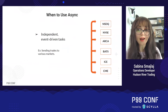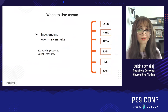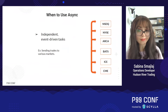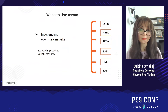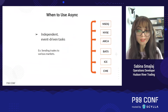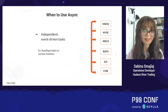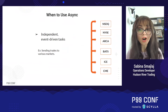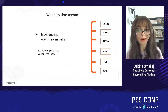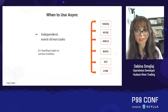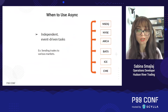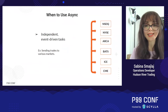Async is useful whenever you have any independent event-driven tasks. Let's say that you are Hudson River Trading and you want to send orders to multiple markets. These markets do not interact with one another, and hence you don't have to send orders to NASDAQ and then NYSE. You can send all of these orders concurrently or in parallel. And as a high-frequency trading firm, you want to send these orders out as fast as you can, so you will definitely want to use async.